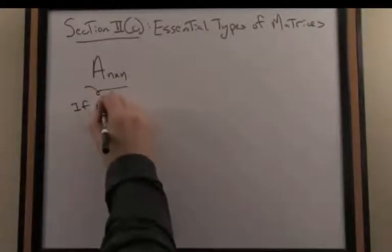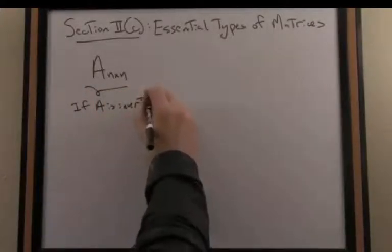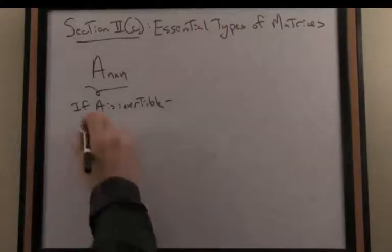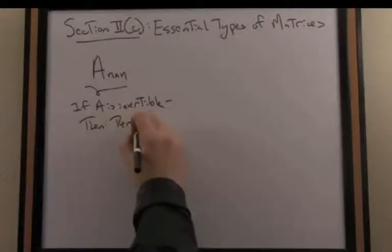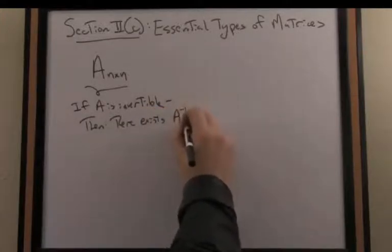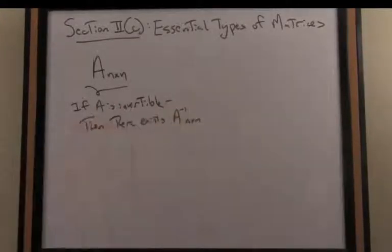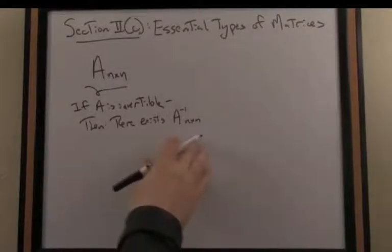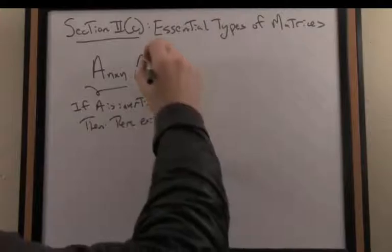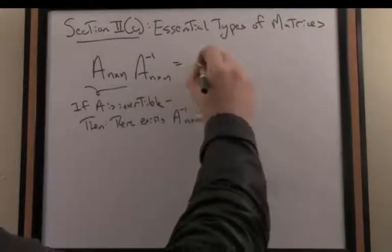If A is invertible, then there exists a matrix A inverse, notated with a superscript, which is also n by n, such that when I multiply A by its inverse, I get the identity matrix.